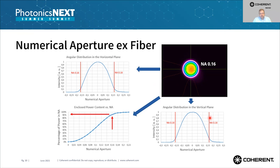In terms of numerical aperture, a lot of power is in the middle going down to less power at the sides. If you start integrating the power from the middle outwards, within a numerical aperture of 0.16 we have above 90% of power content. That also helps when you splice the units to a fiber laser.